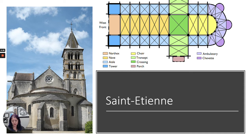We are talking about the Romanesque. You should have already watched the intro video, and now we are going to talk about architecture in the Romanesque period in Western Europe. First, we're going to talk about Saint Etienne. So Saint Etienne is in the Champagne region of France.